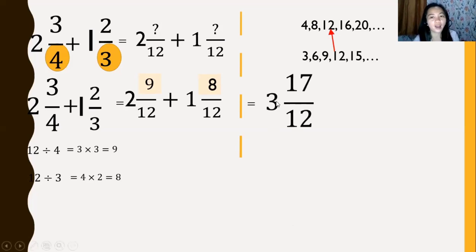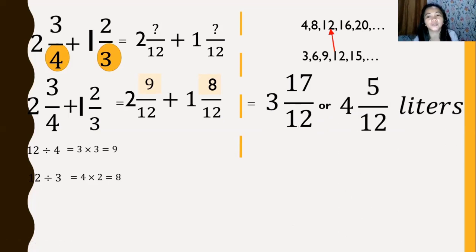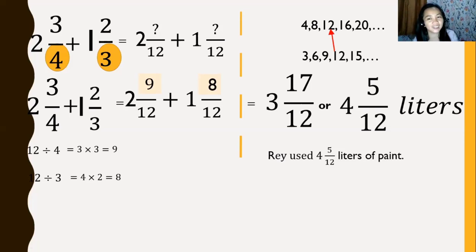We have an improper fraction. How many 12s are in 17? We have 1, with remainder 5. So 3 + 1 = 4 and 5 remainder. The answer is 4 and 5/12 liters. Therefore, Ray used 4 and 5/12 liters of paint.